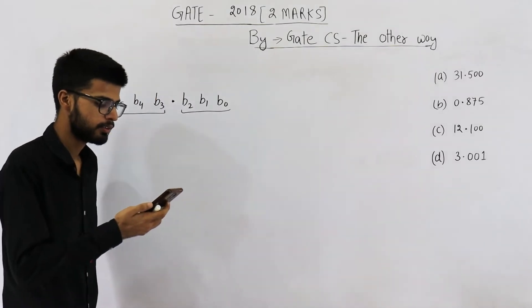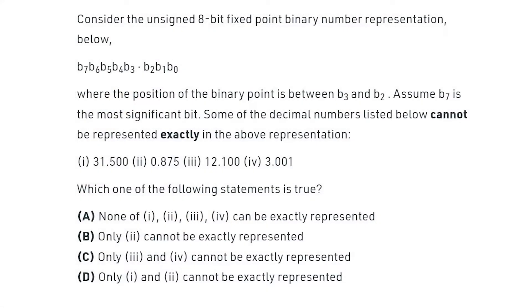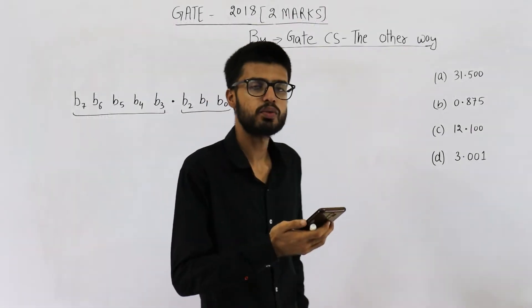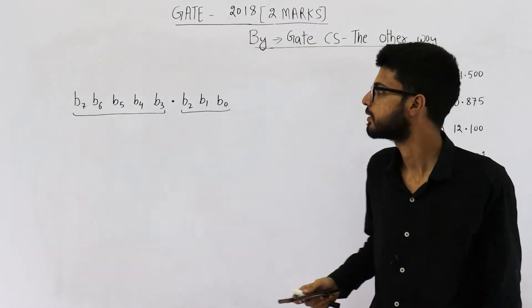It says, consider the unsigned 8-bit fixed point binary number representation below, where position of the binary point is between B3 and B2. Assume B7 is the most significant bit. Some of the decimal numbers listed below cannot be represented exactly in above representation. So they have given you four decimal numbers. Let us check which of these four can actually be represented in this number system.